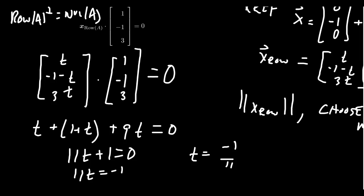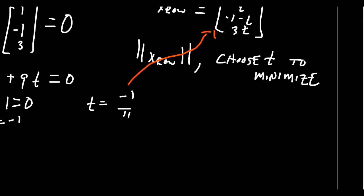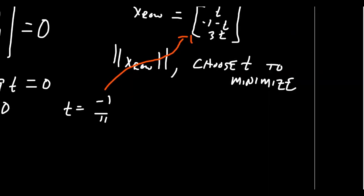And this will then give us our X-row. And so if we plug that in, X-row there. So we get -1/11 for T. We're going to get -1 + 1/11, which is going to give us -10/11. And then three times -1/11 is -3/11.